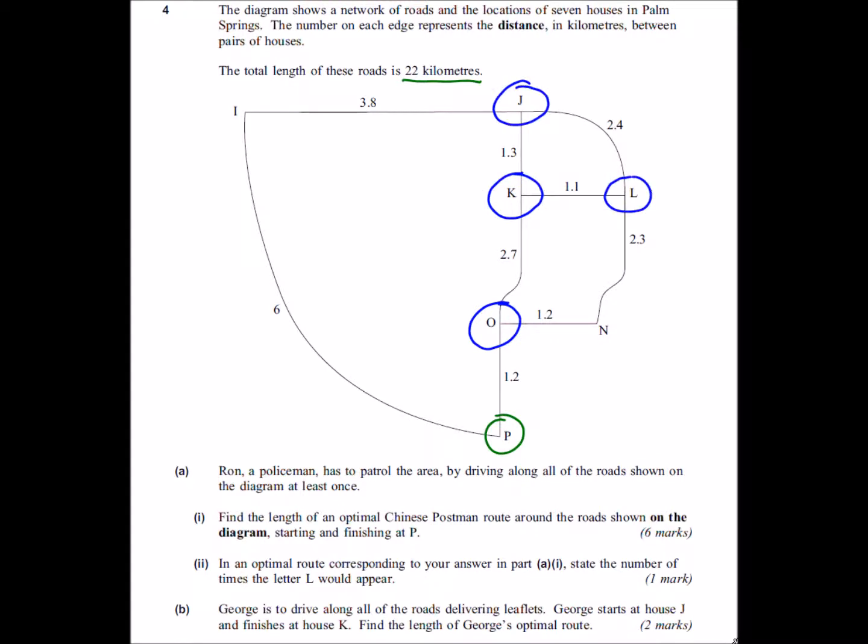With four odd nodes there are three ways of pairing them up. I can pair up J and K and that leaves L and O. I can pair up K and O and that leaves J and L. And I can pair up J and O and K and L. So these are my three ways.